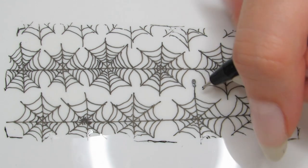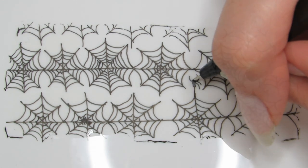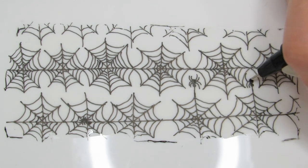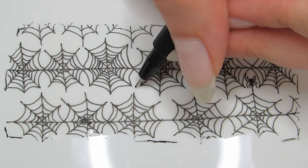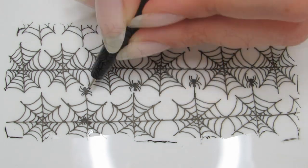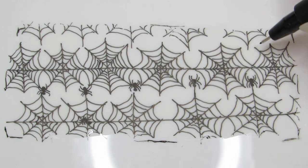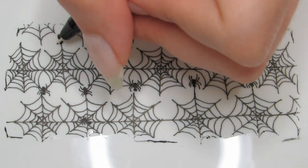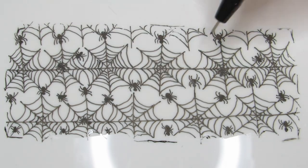Extend the top of each web and draw a small spider with a dot for the head, a bigger dot for the body, and four legs on each side. Repeat on each web, and here I just drew a ton of spiders in any space that I saw to fill it up. I even drew some on the spiderwebs.